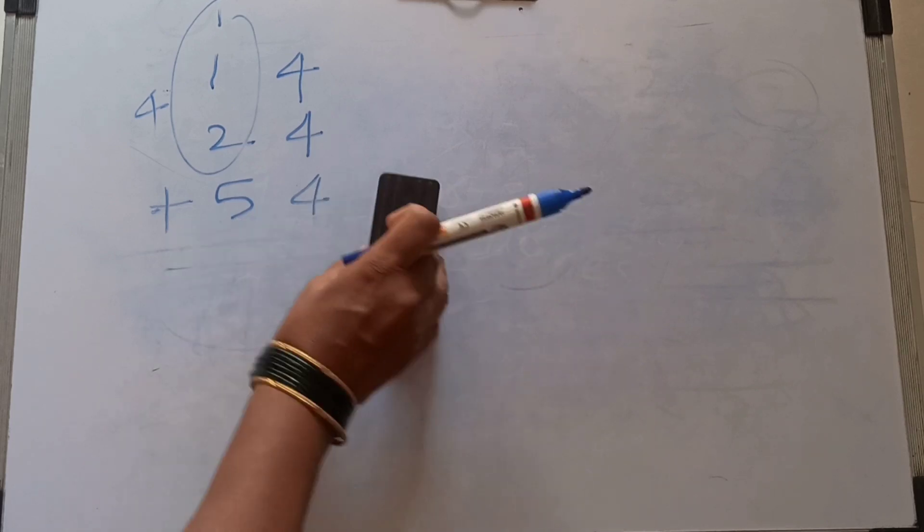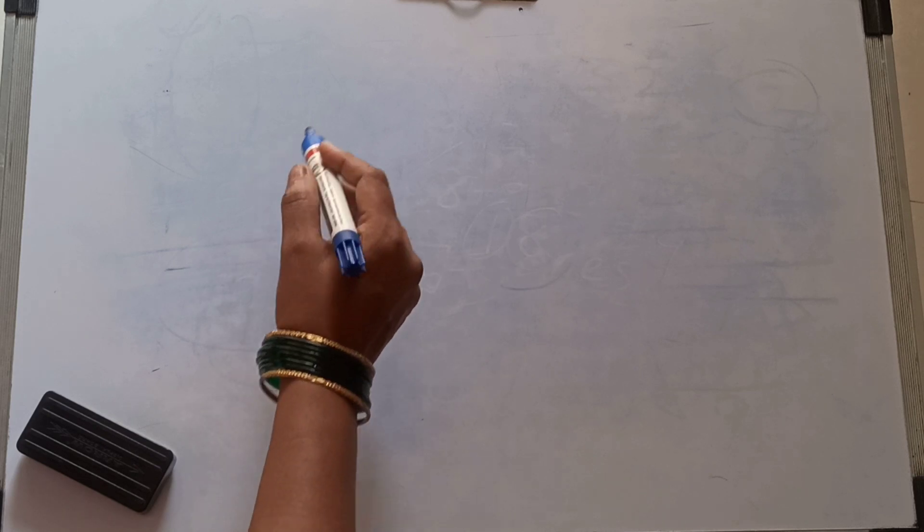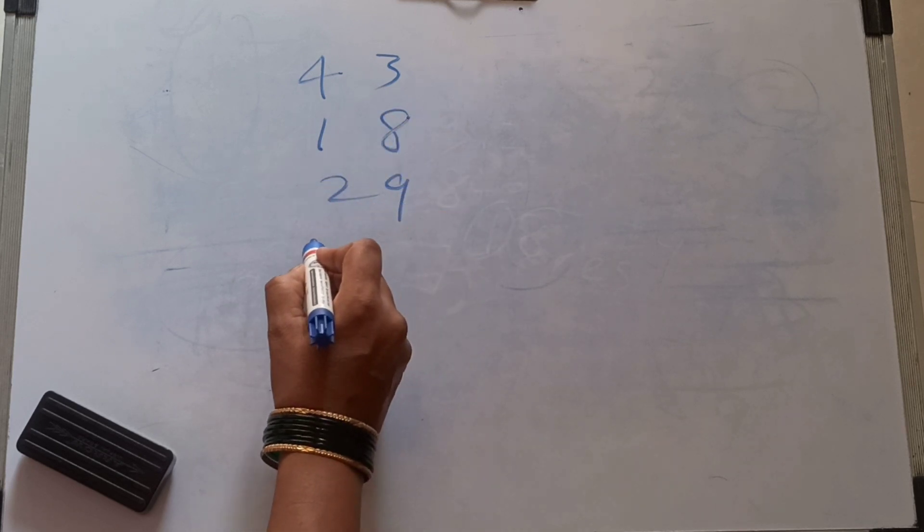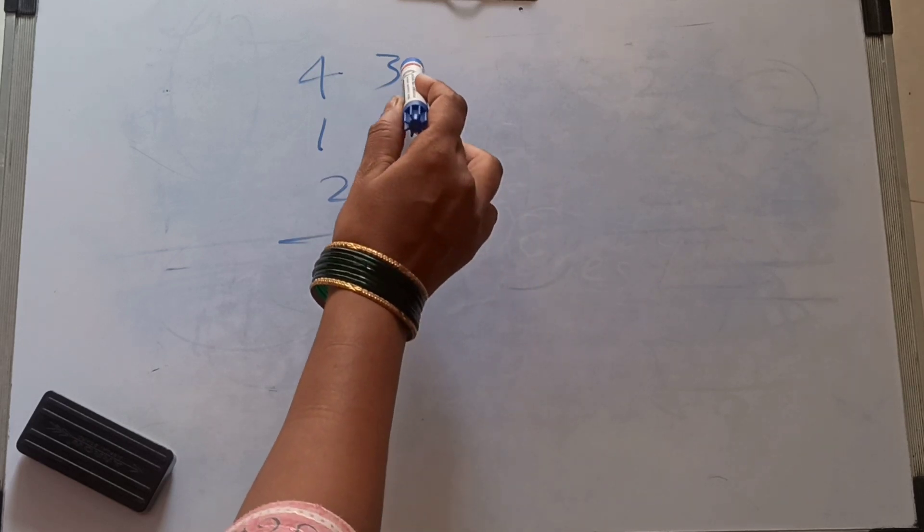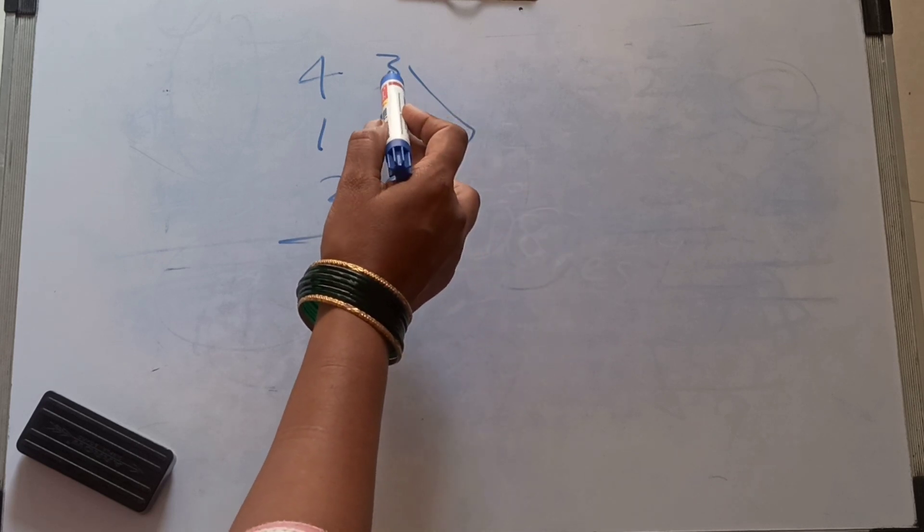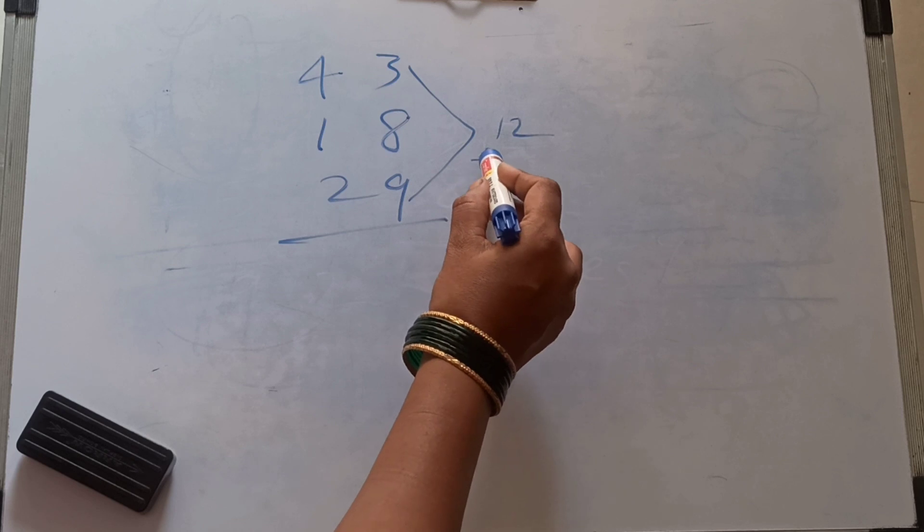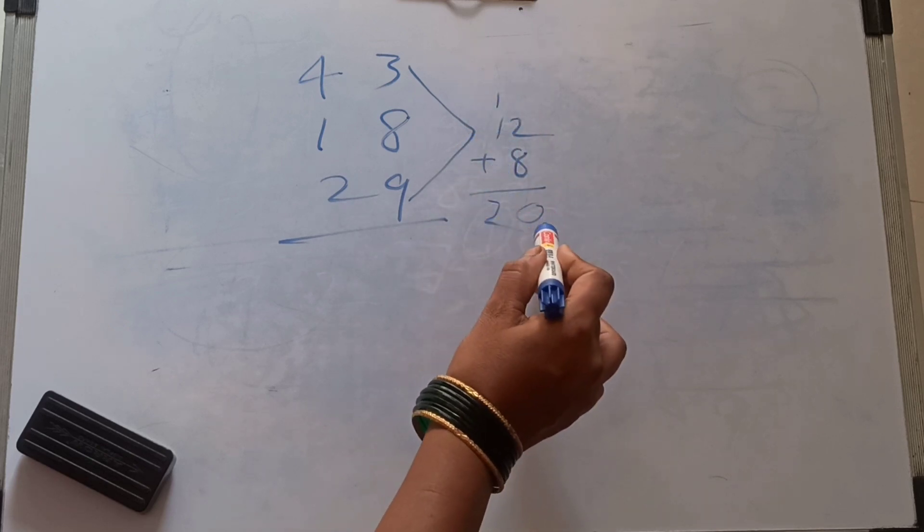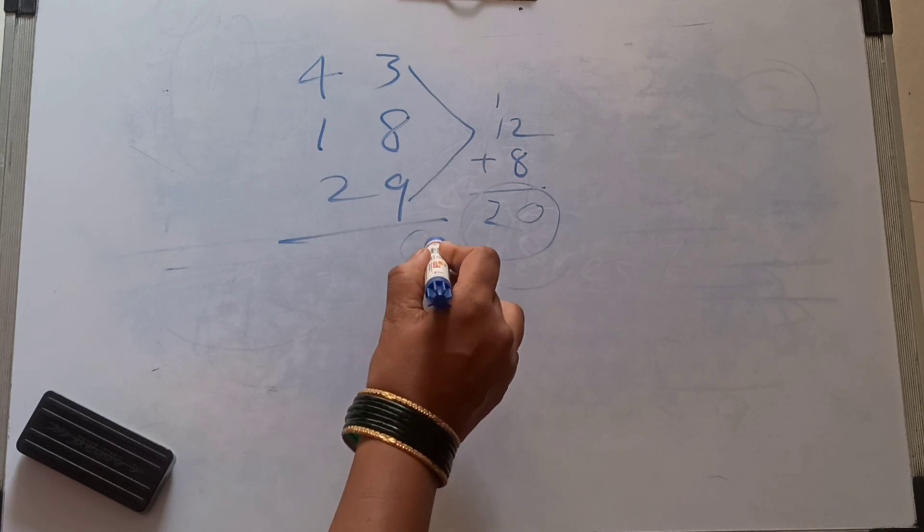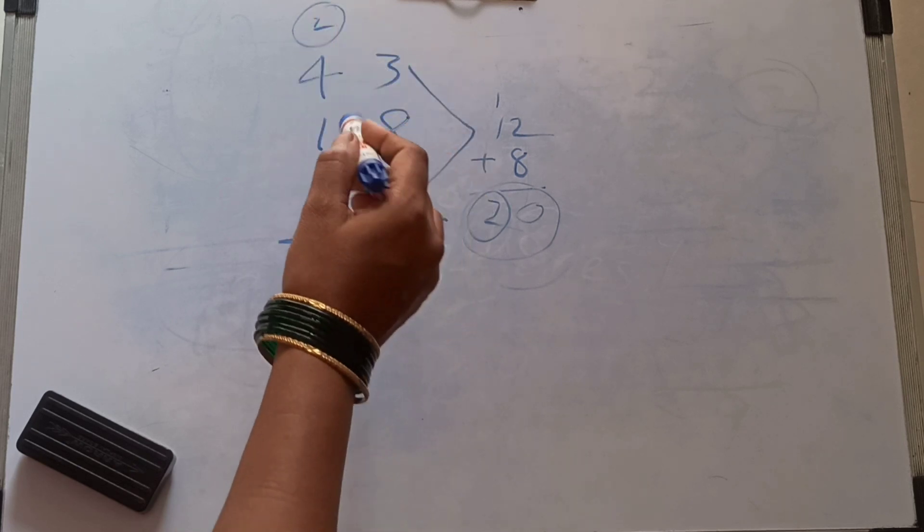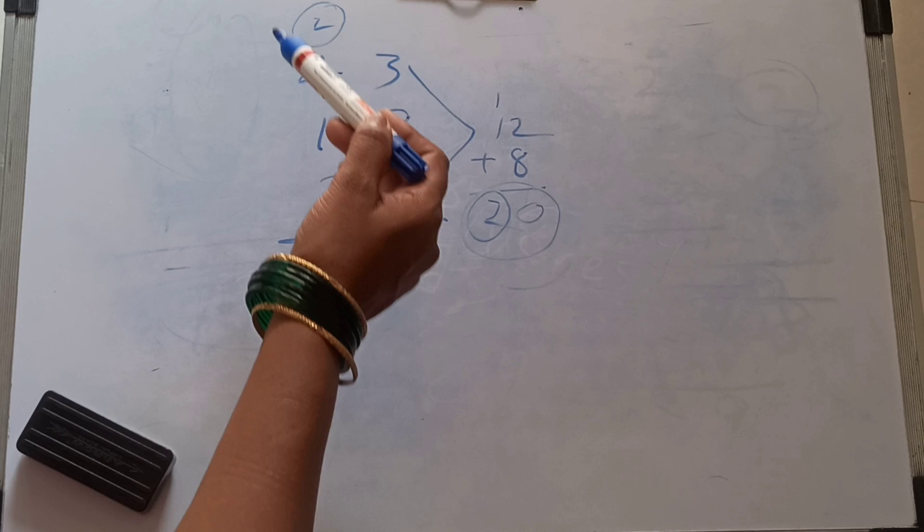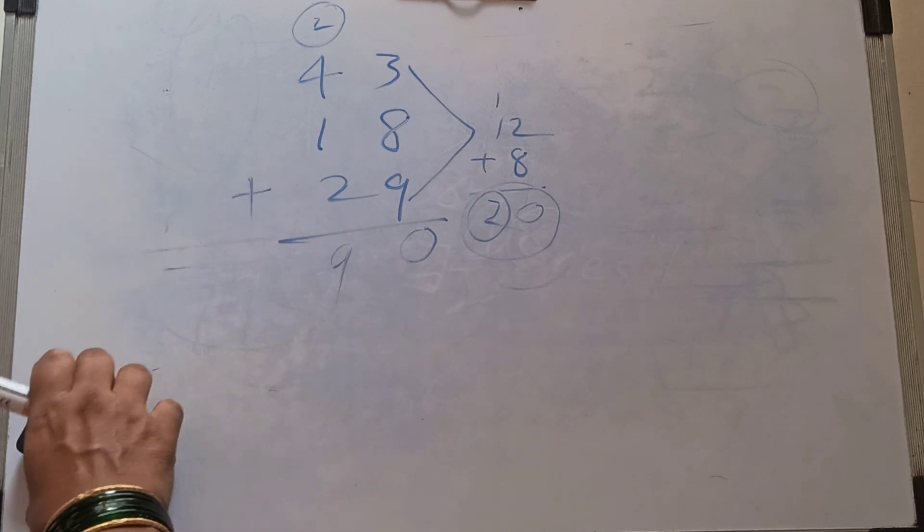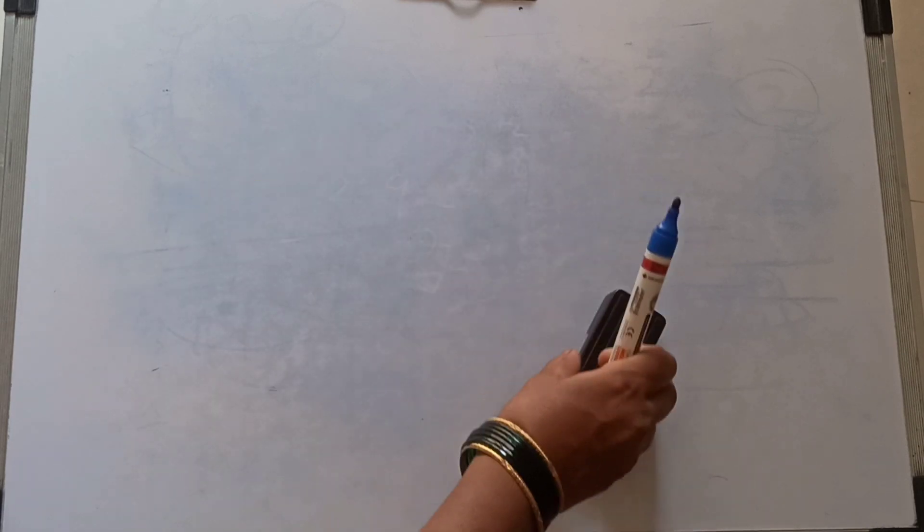Plus sign very important. Done: 43 plus 18 plus 29. 3 plus 9 is 12, and 12 plus 8 is 20 ones. Right here 0, this 2 carried over here. Then 2 plus 4 is 6, plus 1 is 7, plus 2 is 9. I always forgot this one plus sign, you don't.